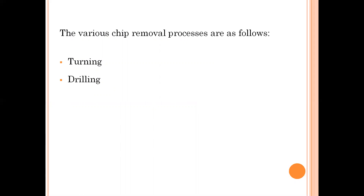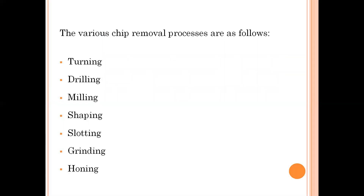There are various chip removal processes — I am giving you only a few here, as there are many. Examples are turning, drilling, milling, shaping, slotting, grinding, and honing. In today's lecture I am going to give an overview of all these processes. In the next lecture we are going to discuss each and every process in depth and in detail.